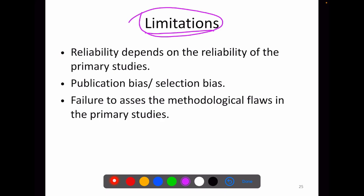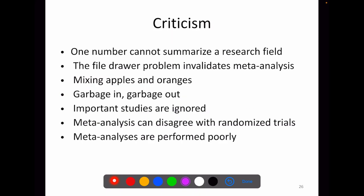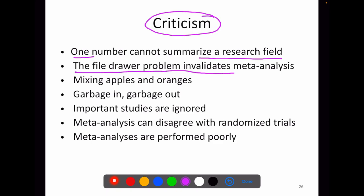The limitations of meta-analysis: reliability usually depends on the reliability of the primary studies. The most common biases are publication bias and selection bias, and even though we have funnel plots and statistical methods to address publication bias, it remains a serious problem. Meta-analysis tries to assess methodological flaws in primary studies but cannot rectify them. A common criticism is that one single number cannot summarize a research field — arriving at a single number by compiling all research articles cannot be accepted by many. The goal of a meta-analysis should be to synthesize effect sizes, how consistent they are and how they are dispersed. The file-drawer problem — where studies finding high treatment effects are more likely to be published than those finding low treatment effects — also invalidates meta-analysis.